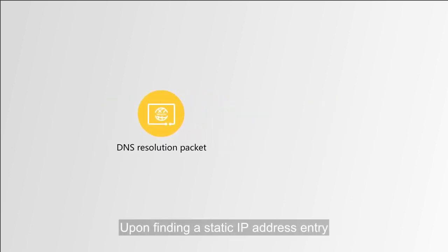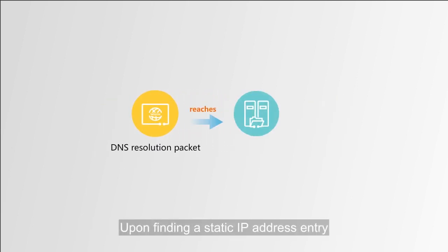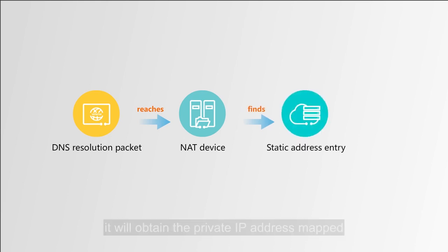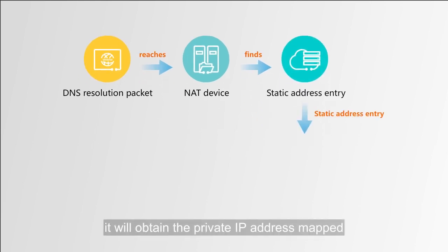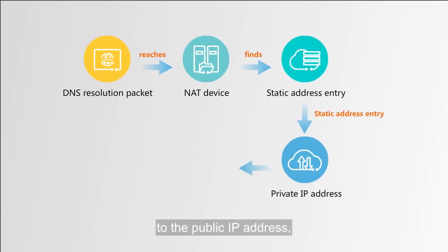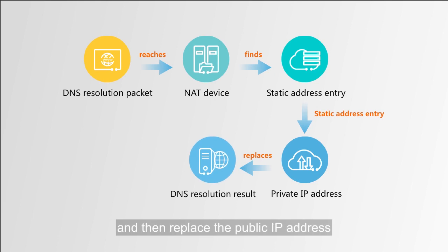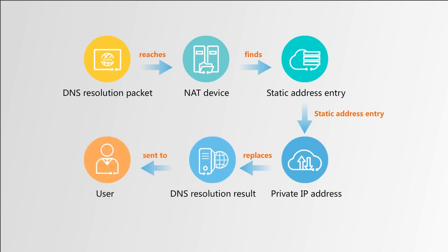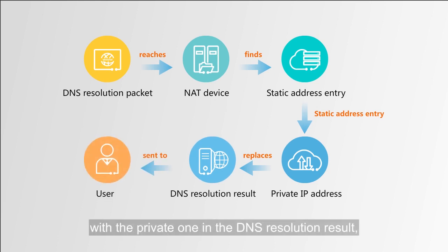Upon finding a static IP address entry based on the DNS mapping entry, it will obtain the private IP address mapped to the public IP address, and then replace the public IP address with the private one in the DNS resolution result, and finally forward the result to the user.